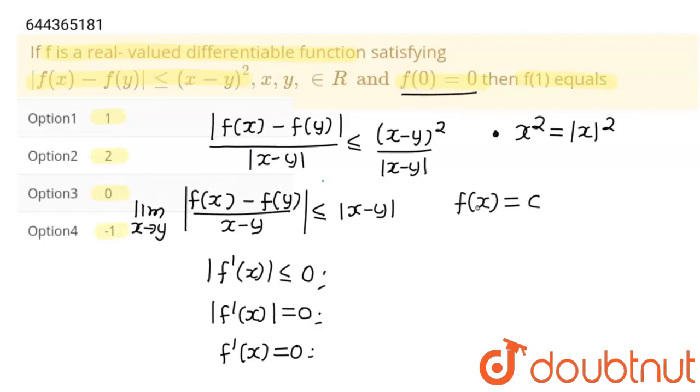And in this question, it's given f(0) = 0, which means that if you put x = 0, this will be 0 and from here we can see that c = 0, which means f(x) = 0.